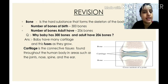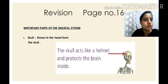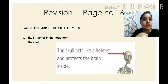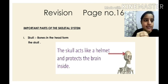Cartilage is the connective tissue found throughout the human body in areas such as joints, nose, and the ear. This is why an adult has fewer bones — because the bones fuse as a baby grows. Now, along with the important parts of the skeletal system, we will also understand its functions.